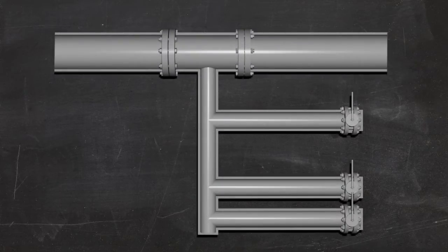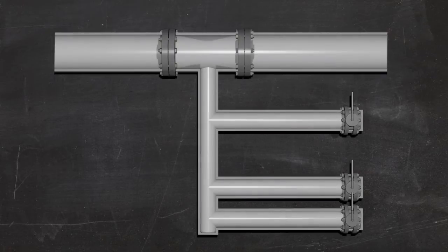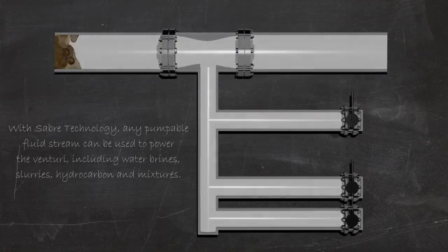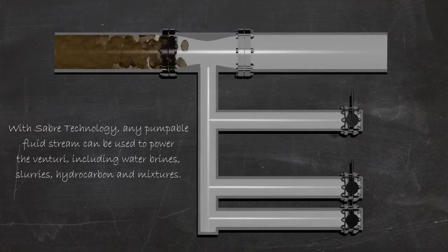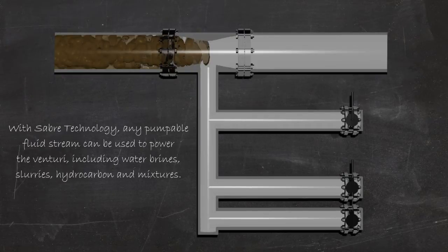This is a cross-section of a patented Sabre Chlorine Dioxide reactor. The flow of fluid is initiated to the Venturi. Sabre Chlorine Dioxide technology allows the use of any fluid to drive the Venturi.